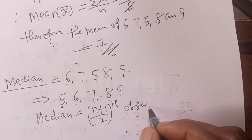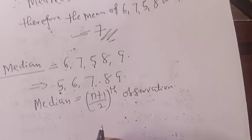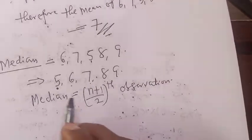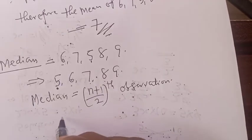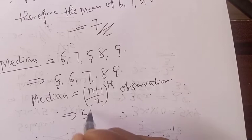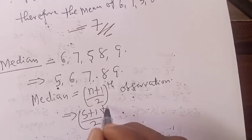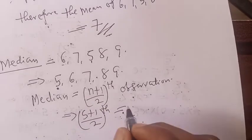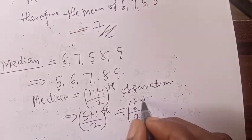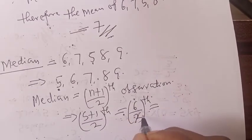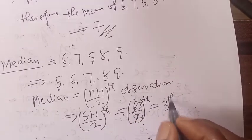Observation. Therefore, our n is 5. This implies that we have 5 plus 1 over 2, which is equal to 6 over 2, which equals 3. So we look for the 3rd observation.